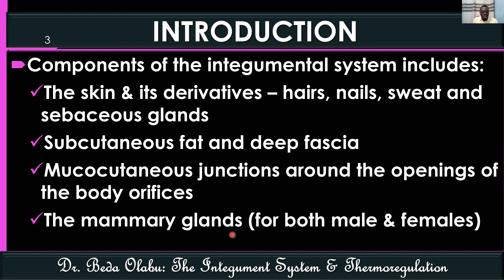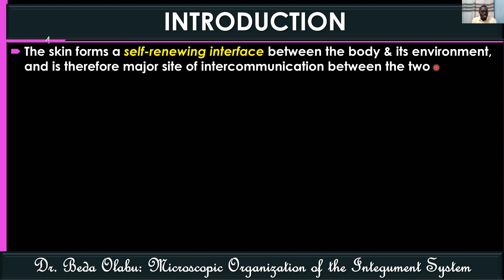Last but not least, the integument system also includes the breast — both male and female. The skin itself is a self-renewing interface between the body and the environment, and because of this it is a major site of intercommunication between the two. It is a very important interface between the outside environment and the internal body organs.